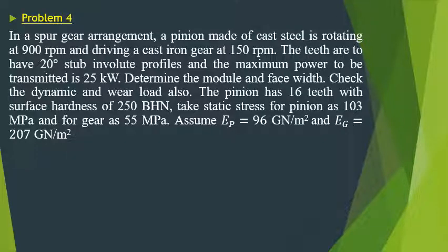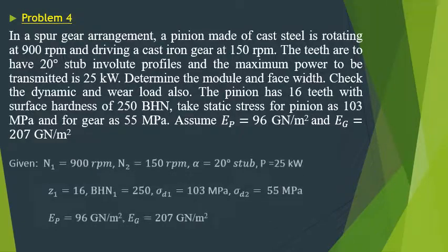Coming to the next problem on spur gears: a pinion made of cast steel is rotating at 900 rpm and driving a cast iron gear at 150 rpm. The teeth have a 20-degree stub involute profile and the maximum power to be transmitted is 25 kilowatt. Determine the module and face width, check the dynamic and wear load. The pinion has 16 teeth with surface hardness 250 BHN, static stress for the pinion is 103 MPa and for the gear is 55 MPa. Assume E_p = 96 GN/m² and E_g = 207 GN/m².